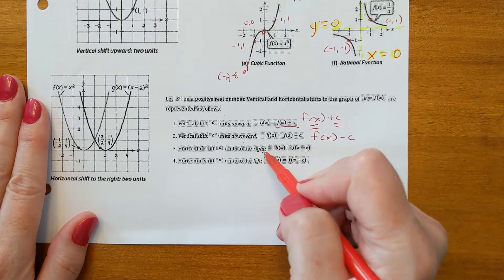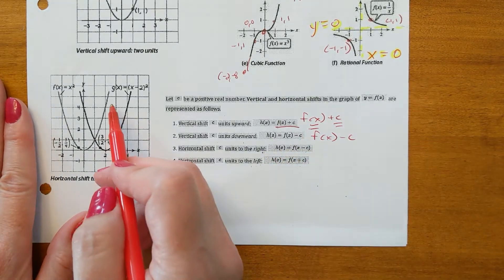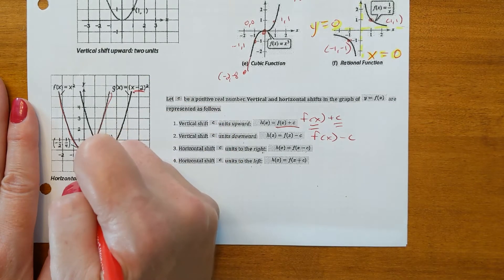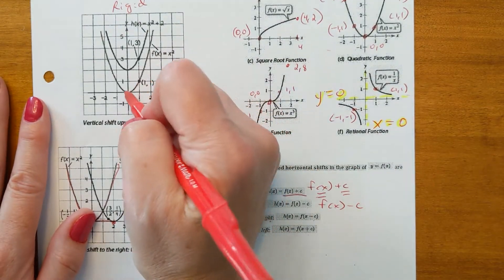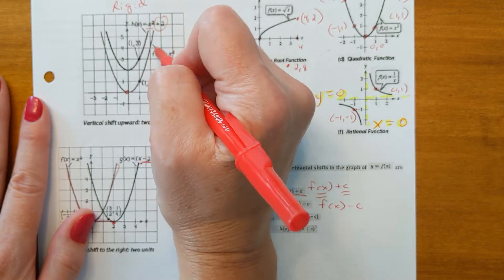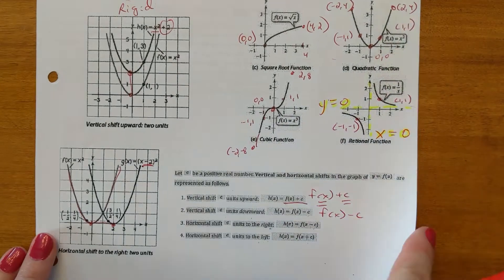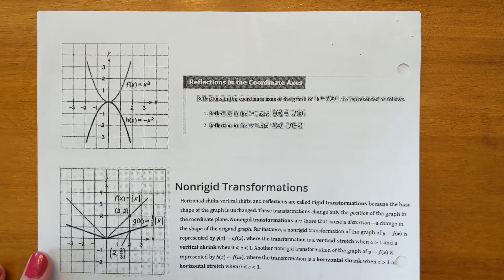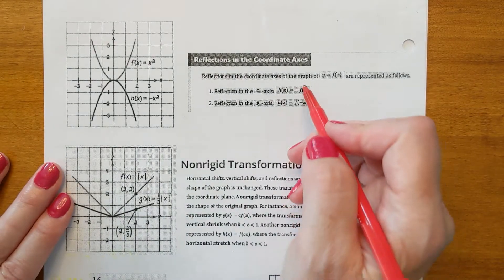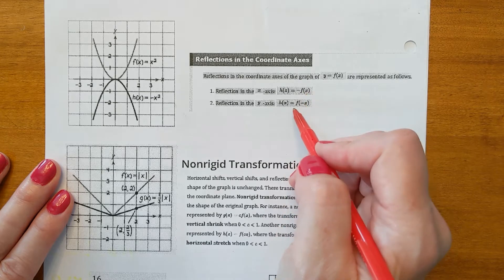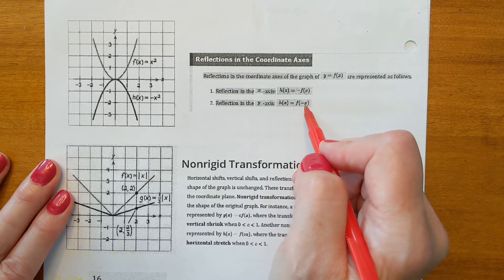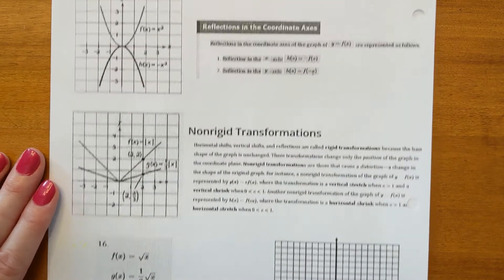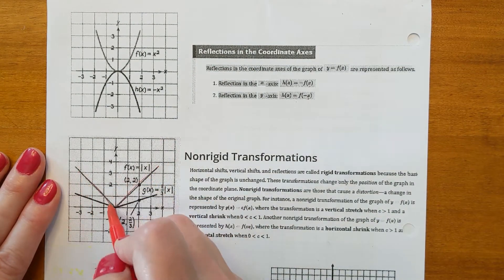For example, f(x) = x². With (x - 2) inside the parent, the whole graph shifts to the right 2. When they add 2 outside of x², it shifts up 2. Another rigid transformation is a reflection. If you put a negative outside of f(x), it's a reflection over the x-axis. If the negative is inside the function on the x, that reflects it over the y-axis.